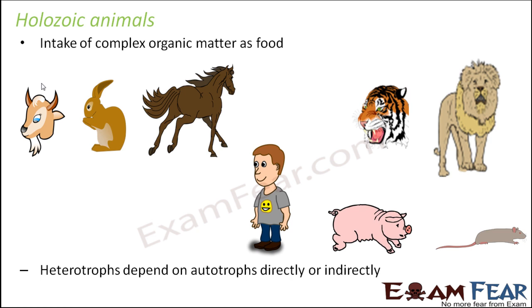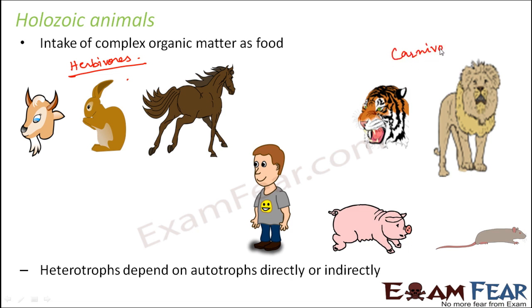Holozoic animals are of many different types. For example, goat, rabbit, and horse are animals that directly eat plants, so they are called herbivores — they are directly dependent on plants. Tiger and lion are called carnivores because they feed on animals which in turn feed on plants. A tiger might eat a deer, and a deer eats plants, so carnivores eat up the herbivores.